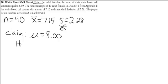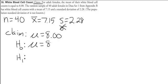Now let's write up our hypotheses. We have a null and an alternative, and one of them has to be our claim. Since our claim has an equals in it, we know that has to be our null hypothesis. There's nothing in the question telling us what the alternative is, so we'll go with the standard: the alternative is just 'not equal.'